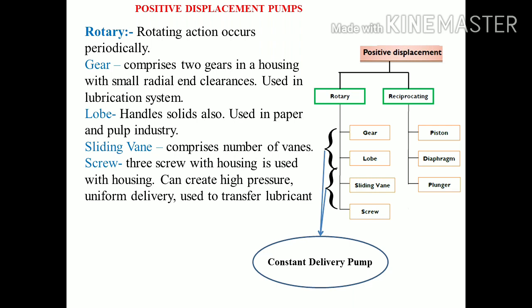The lobe pump is another type of positive displacement pump which is similar to the gear pump — the working principle is more or less the same as the gear pump. It handles solids also and is used in paper and food industries. The sliding vane pump comprises a number of vanes instead of gears or lobes, and the vane is aligned along the radial direction of the rotary element.